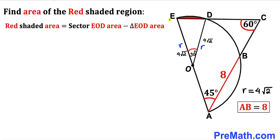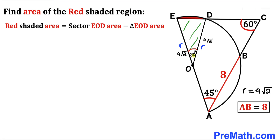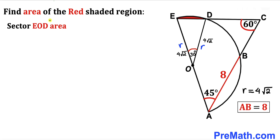The area of the red shaded region equals the area of sector EOD minus the area of triangle EOD. Our task now is to calculate both the sector area and the triangle area.